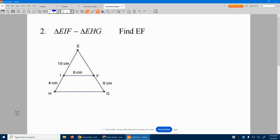Number two, triangle EIF is similar to the large triangle EHG. So you have the small triangle is similar to the large triangle, which will always be true.